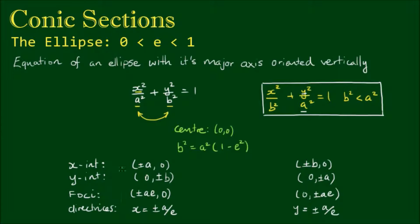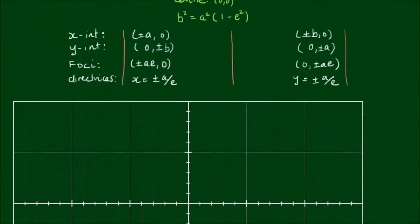Here is a table that summarizes the differences in features between a horizontally oriented and a vertically oriented ellipse. Now let's do an example.